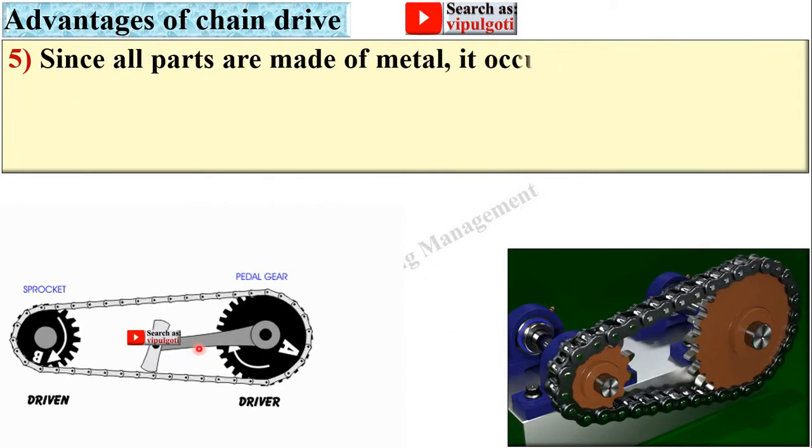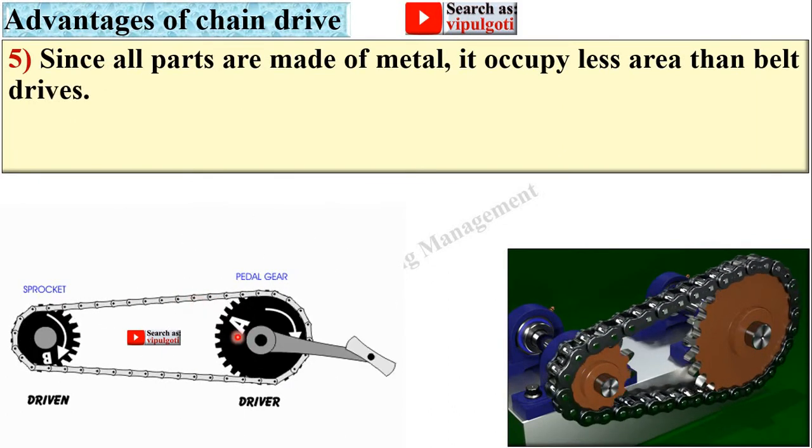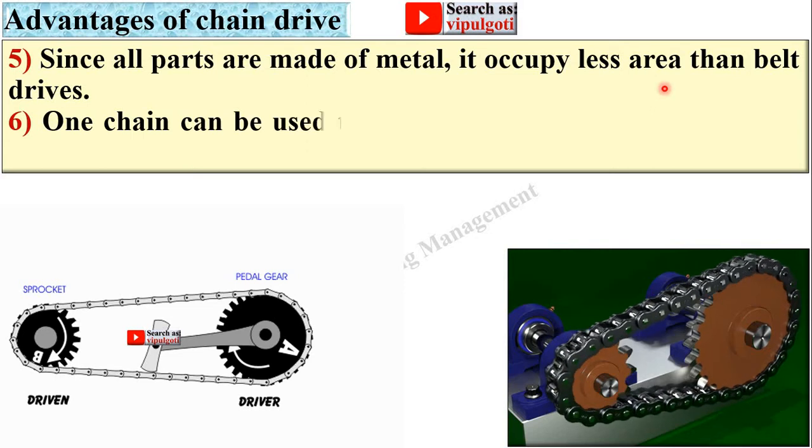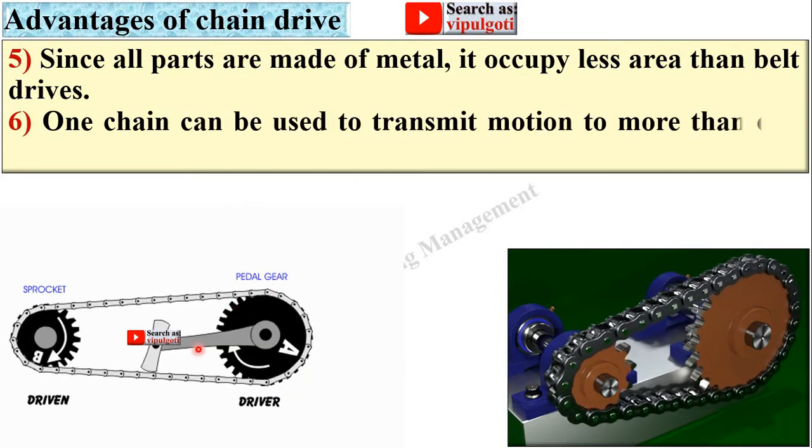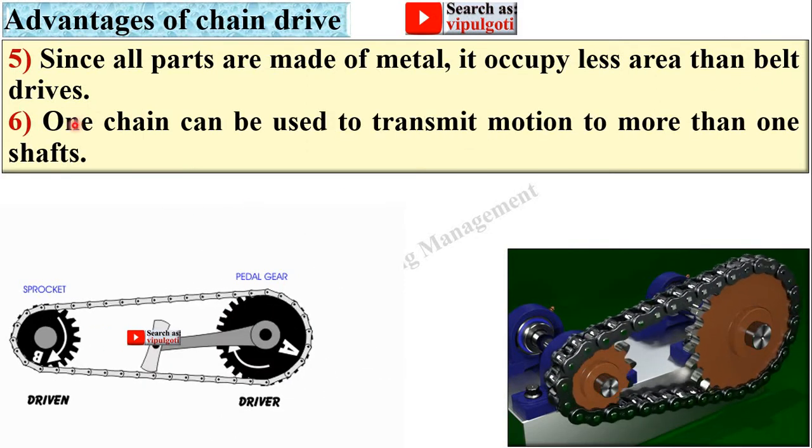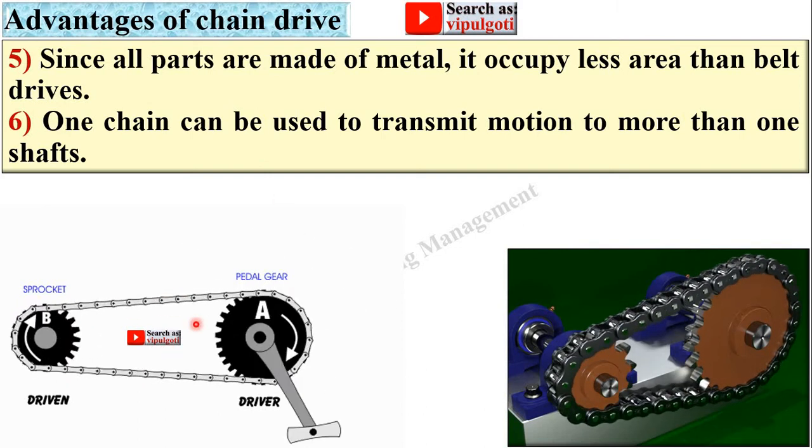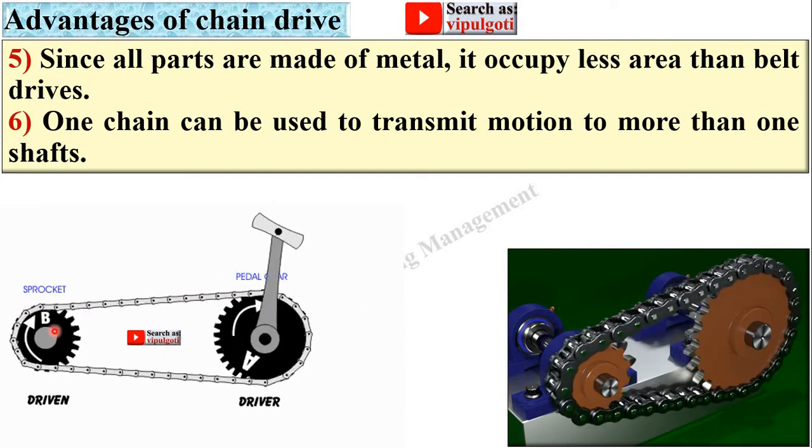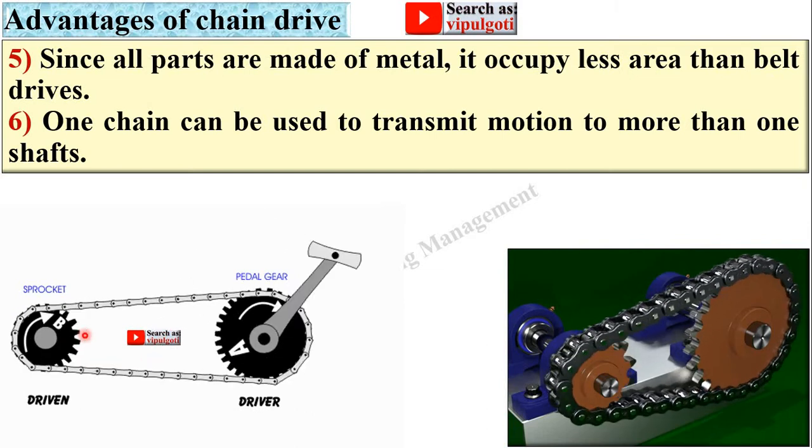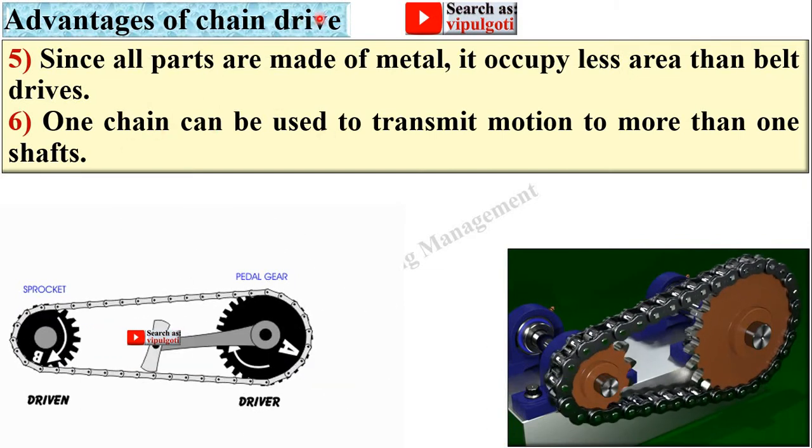Next, since all parts are made of metal it occupies less area than the belt drive. One chain can be used to transmit motion to more than one shaft also with the help of the chain drive.